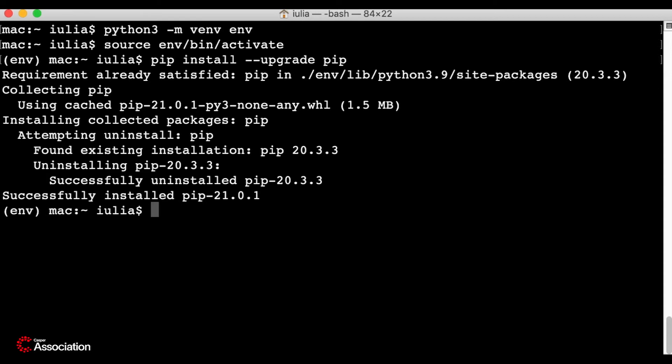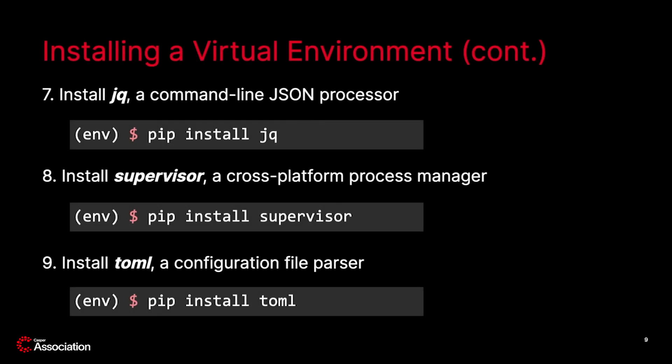Let's carry on. There are three more tools to install before running NCTL. In step 7, install JQ, which is a command line JSON processor.